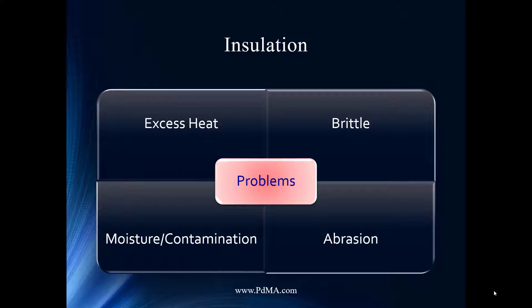Insulation is classified as Class A, B, F, and H — all controlled by temperature. What happens if you exceed that temperature? A well-known rule of thumb is that for every 10 degrees above the design temperature, you cut the insulation life in half. So if you have a Class F insulation with a winding temperature above 155°C, getting just 10 degrees above that could reduce insulation system life by 50 percent.